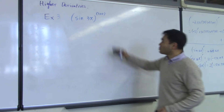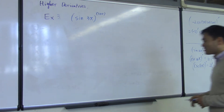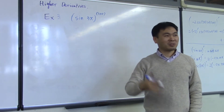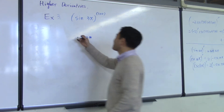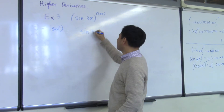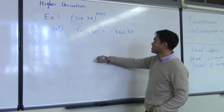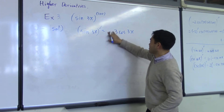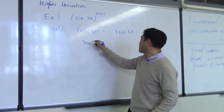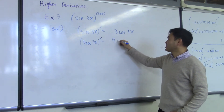So how would you differentiate this 100 times? You differentiate once, and you get negative 3 cosine 3x. Why do you have negative 3? Because sine differentiates to cosine, and 3 comes out. And then negative 3 cosine of 3x prime gives you negative 9 sine 3x.